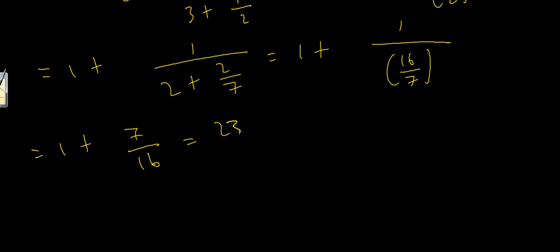So this becomes 1 plus 7 over 16, which is 23 over 16 if you care to check. So that's our continued fraction. That's the value of the continued fraction 1, 2, 3, 2.